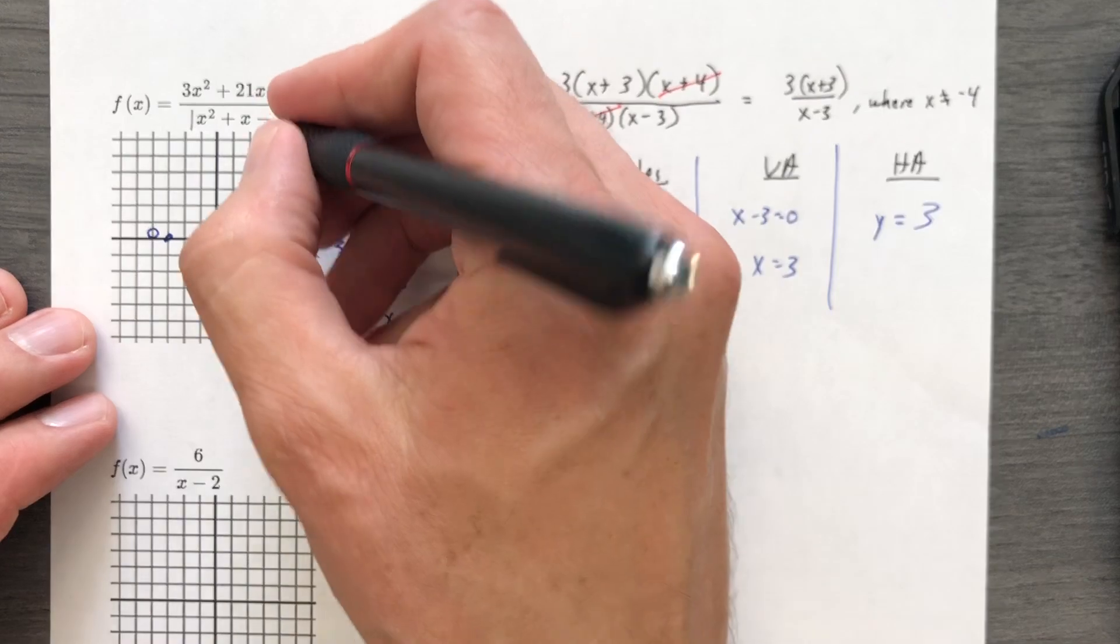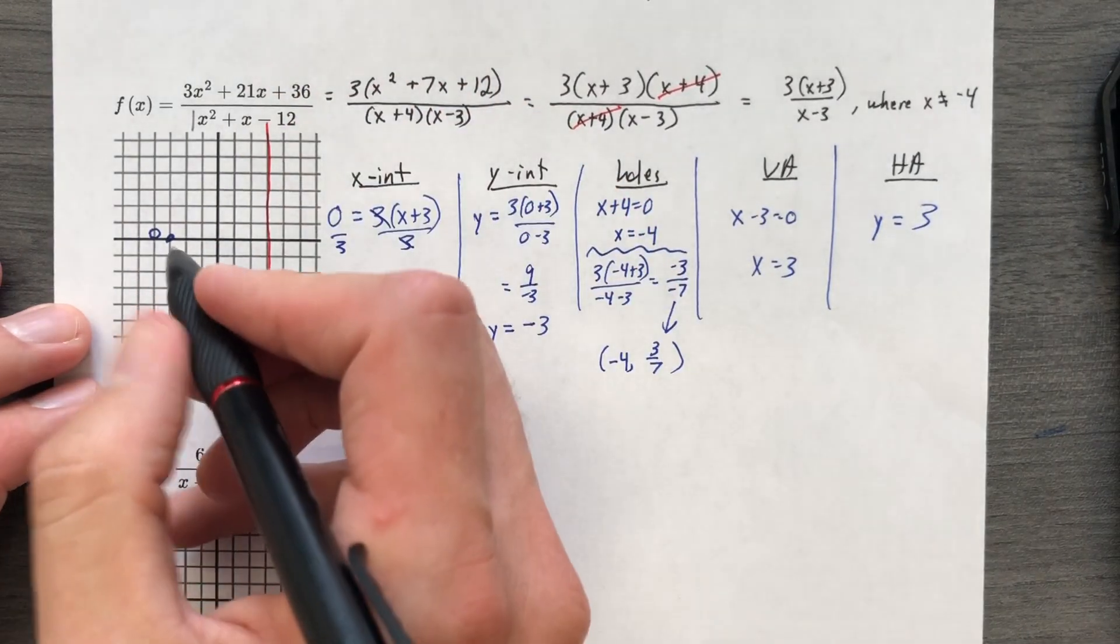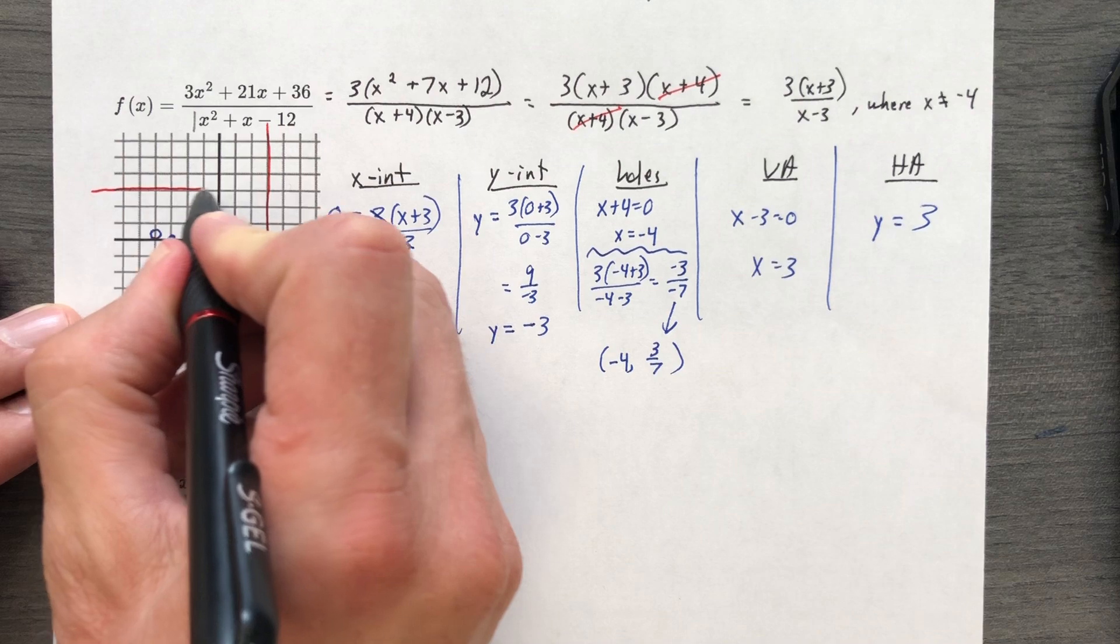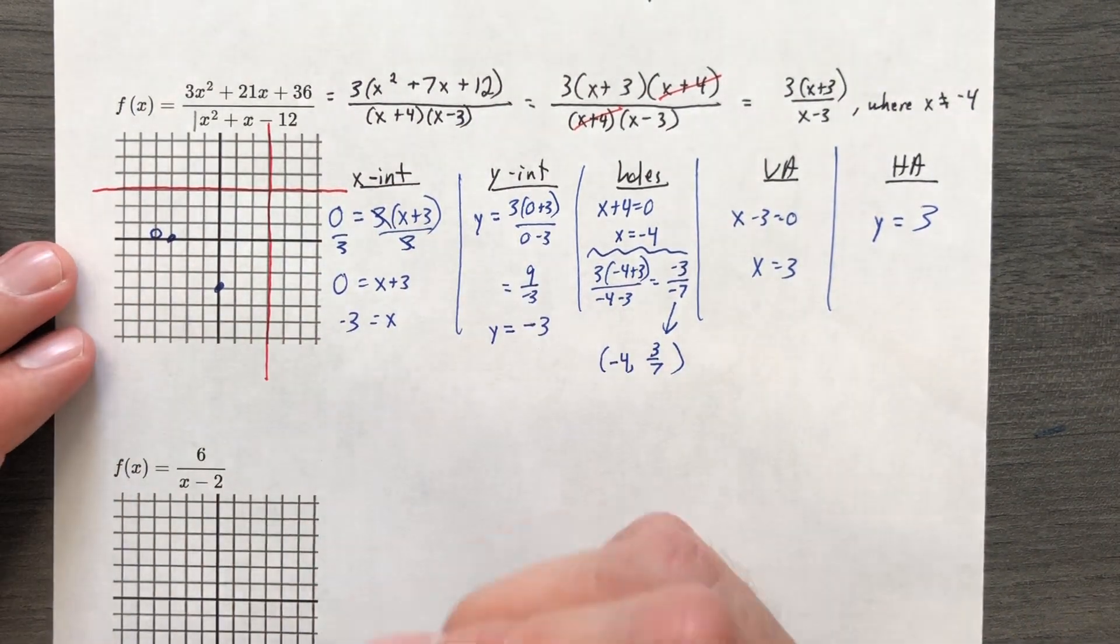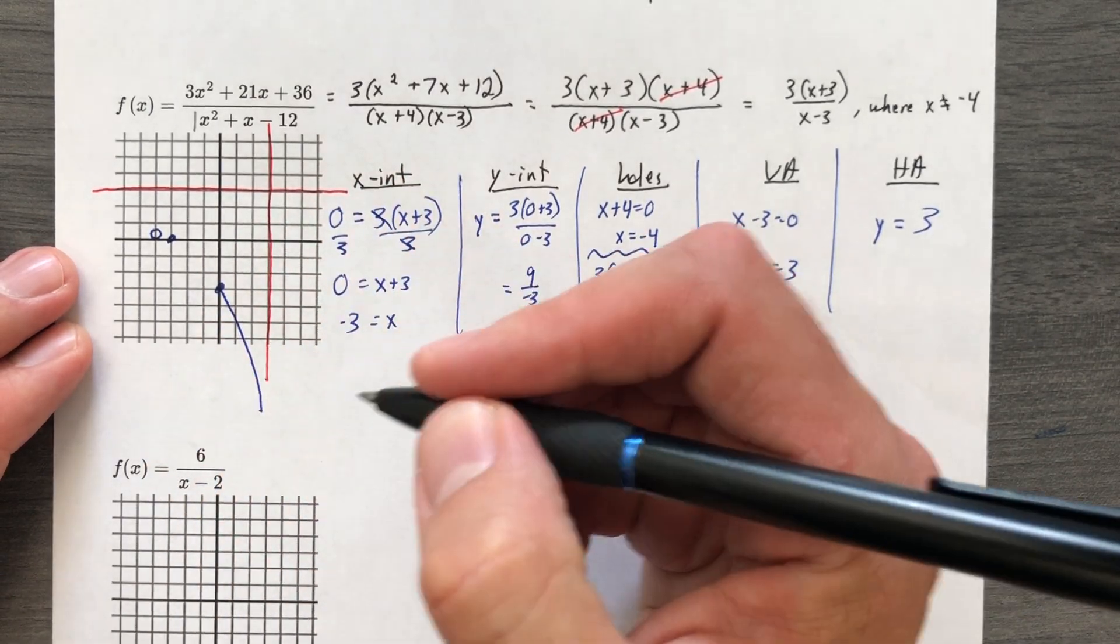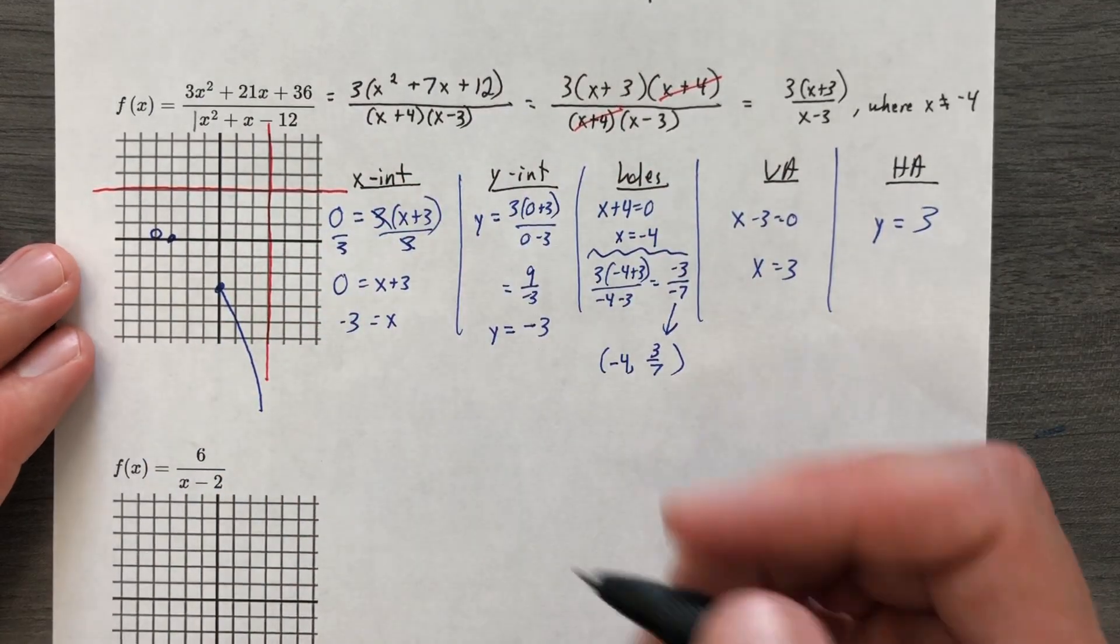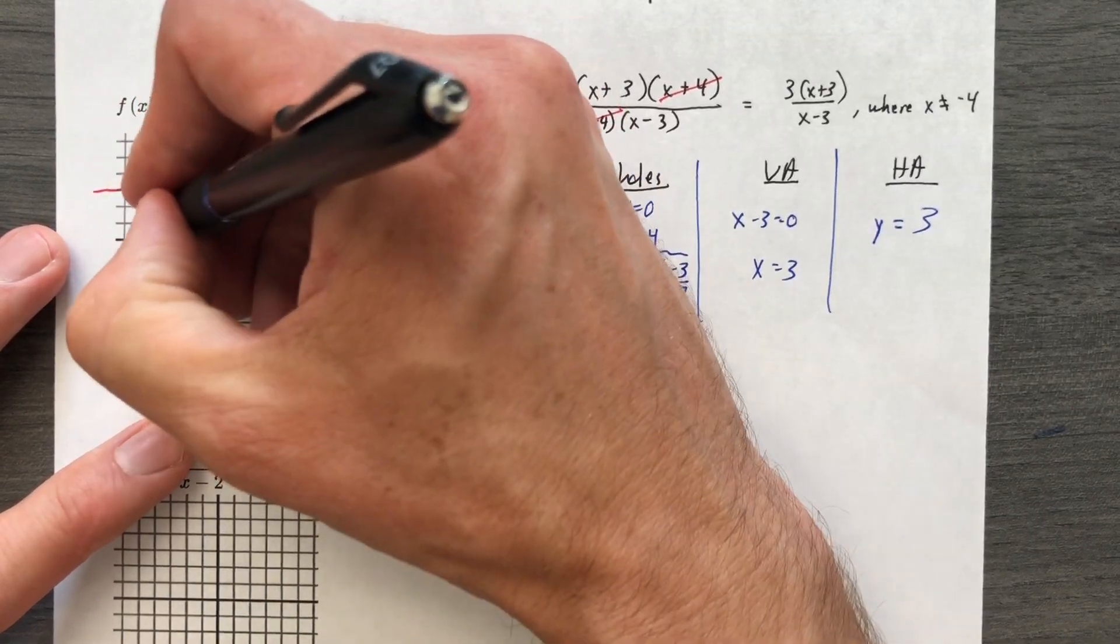All right, we have a vertical line at x equals 3. We have a horizontal line at y equals 3, and we're going to draw this. It's a fun one, isn't it? Now, how close does it get? Very close. How soon does it get that close? Don't be picky about it. If you can find the stuff, you're good.